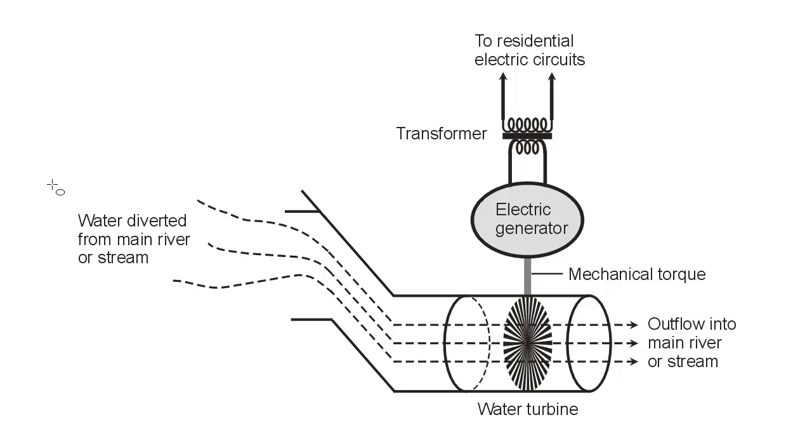But what you do is divert the water from the main river or stream, and that's where the term diversion comes from. So the water flows through the turbine, it turns the generator.